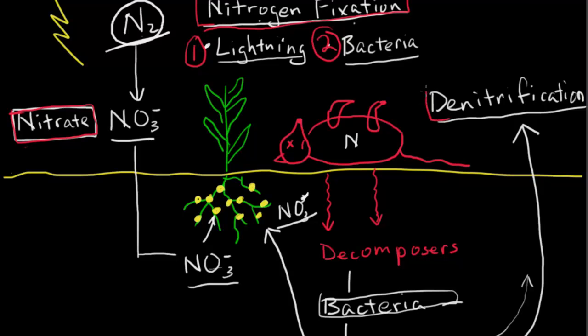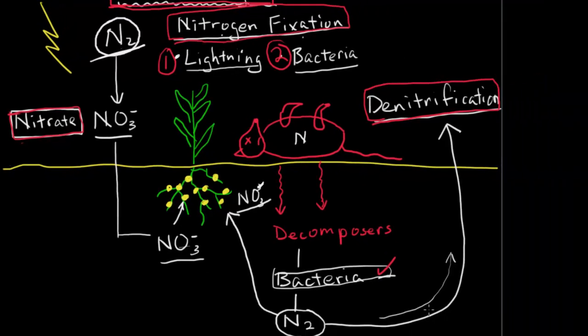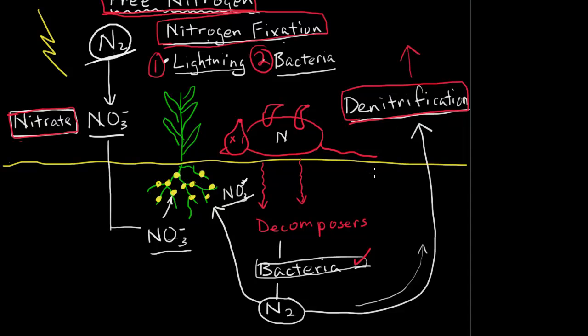And then the third term that we need to be aware of is denitrification, where bacteria decomposes the compounds, turns it back into N2, and brings it back into the atmosphere. I know it's a little long, the process gets a little complicated. Hopefully this clears it up. Watch the video a couple times, hopefully it will become clear to you.